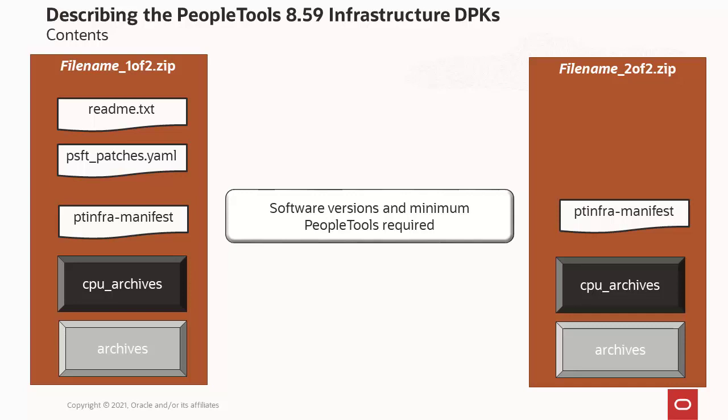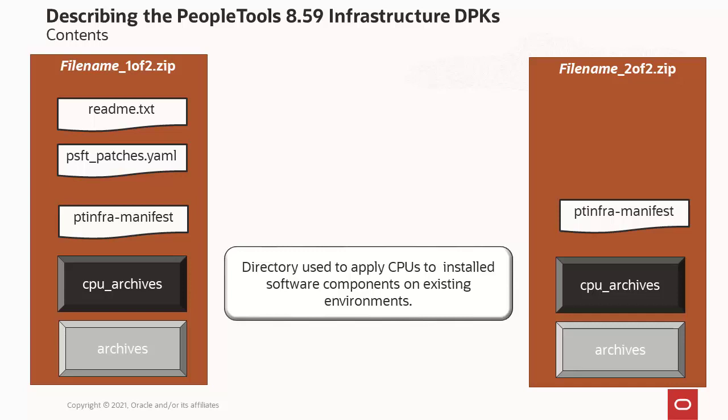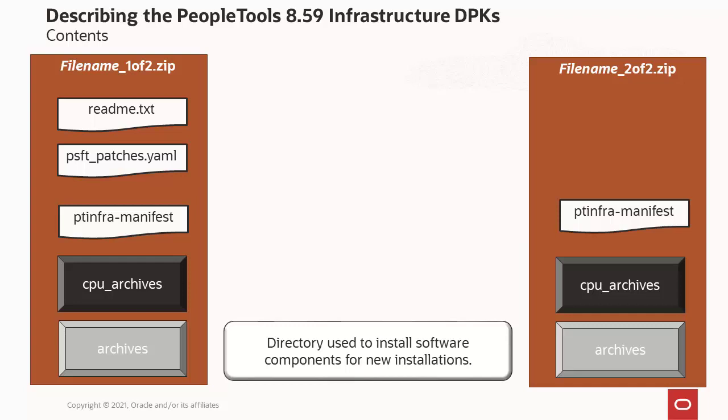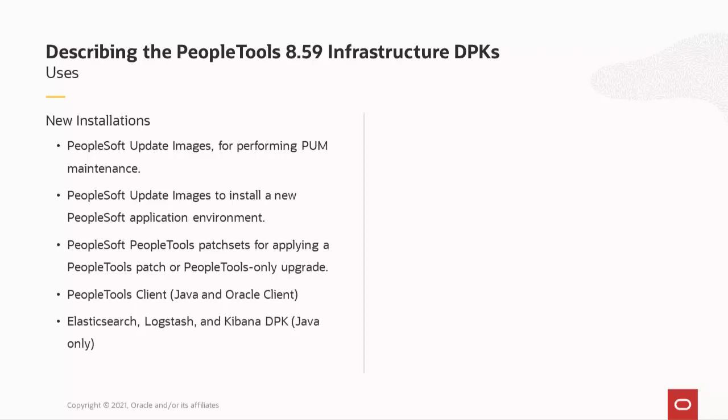The psft_patches.yaml file includes the full path and file name for each of the CPUs in the PT-ENFR DPK and gives more details about the patch numbers. The PT-ENFR-MANIFEST is a text file that lists the versions and CPUs of the delivered components. The manifest also specifies a minimum PeopleTools version that the PT-ENFR DPKs can be used with. Your first step is to compare the software versions in the PT-ENFR-MANIFEST with the versions in the manifest for the PeopleSoft image or PeopleTools patch DPK, and check that the PeopleTools minimum requirement is satisfied. The cpu_archives directory includes artifacts used to update CPUs on existing environments, and the archives directory includes artifacts used to install updated software components for new installations.